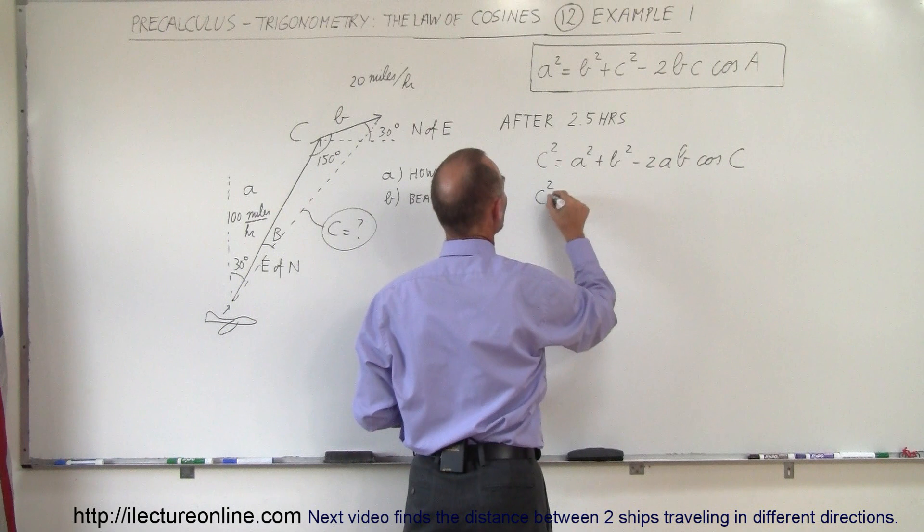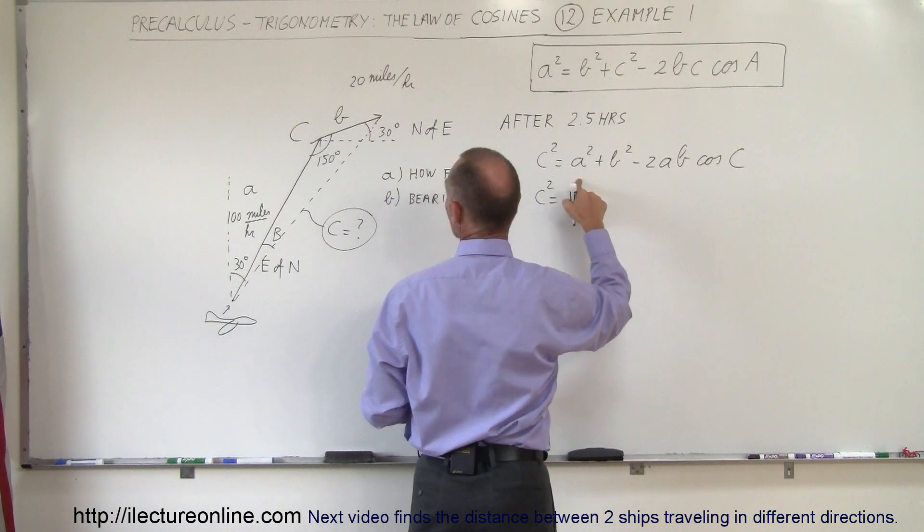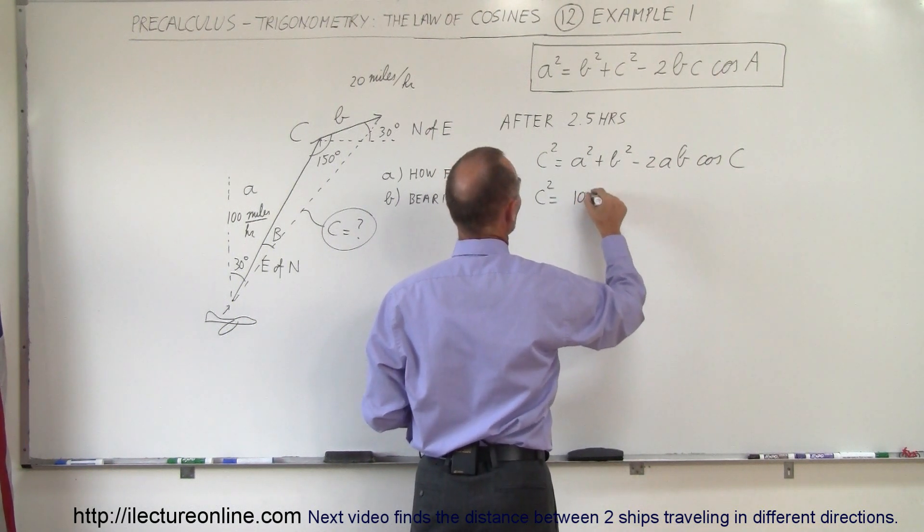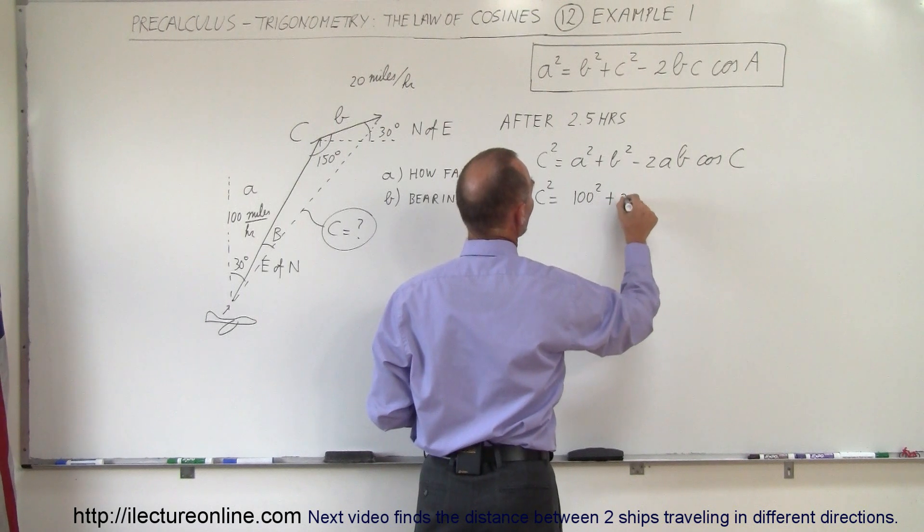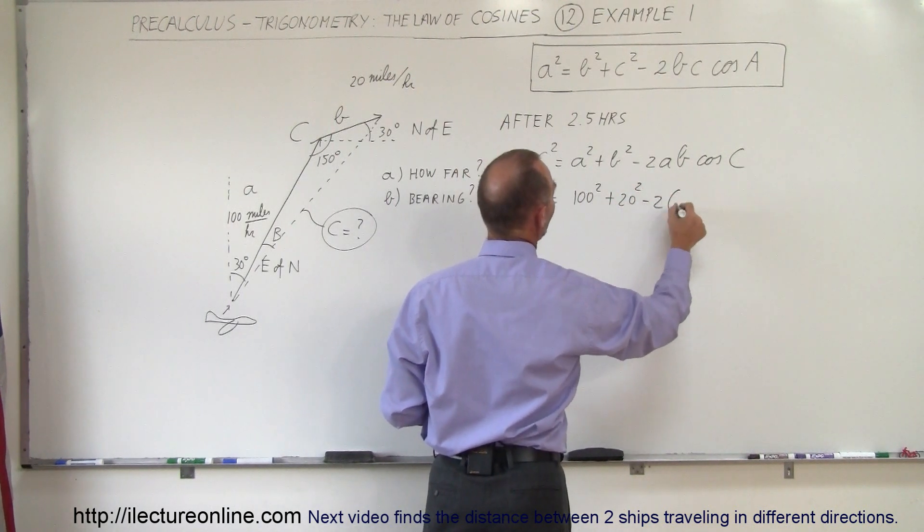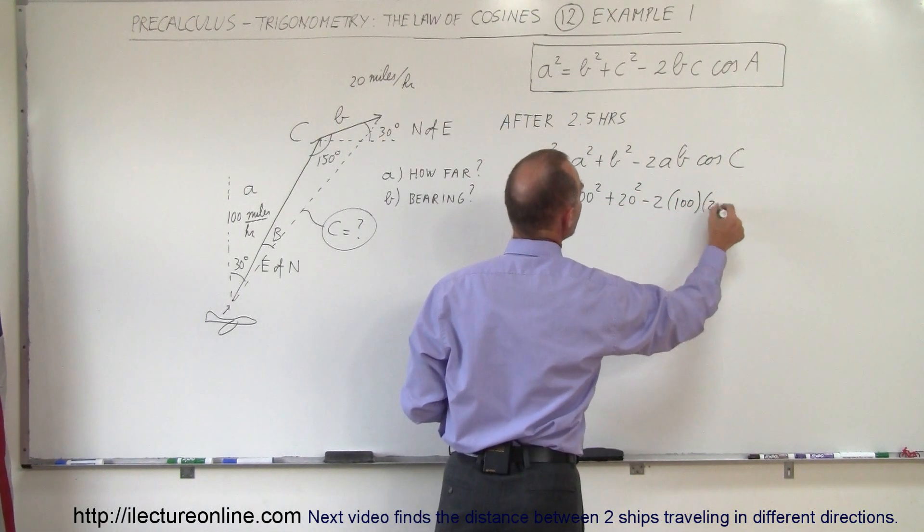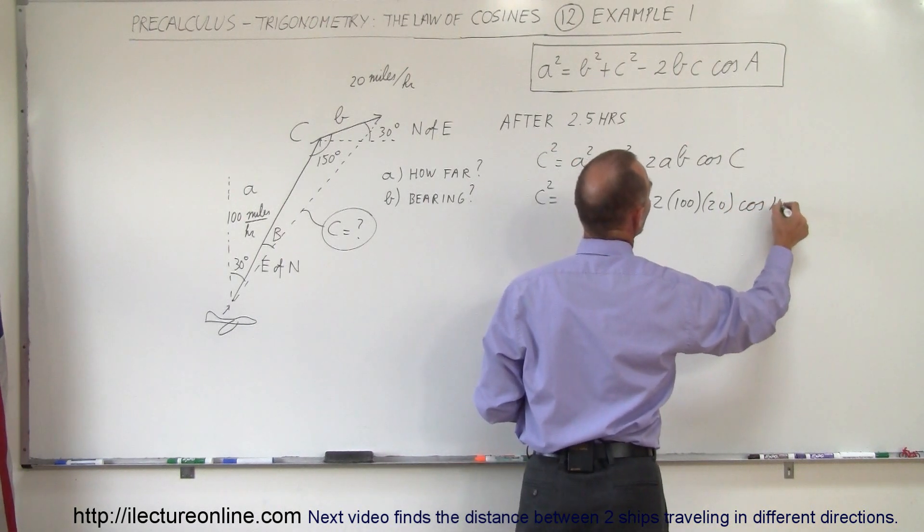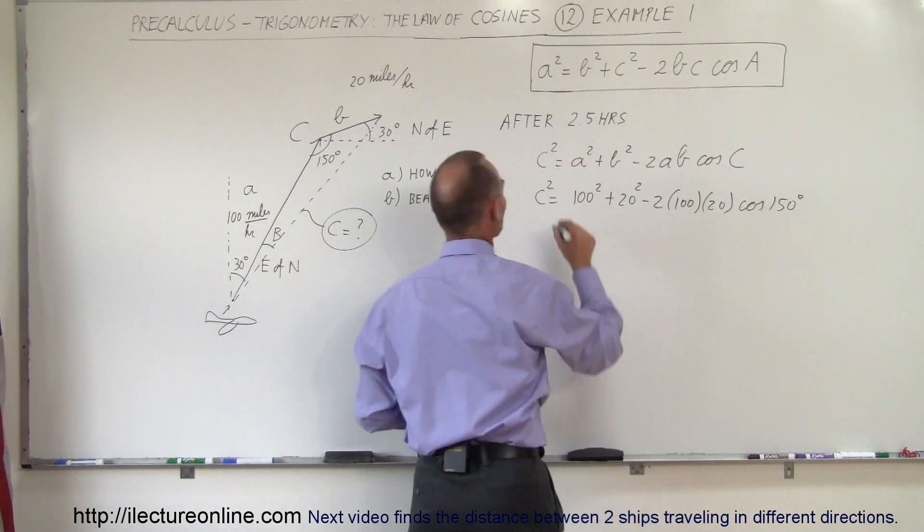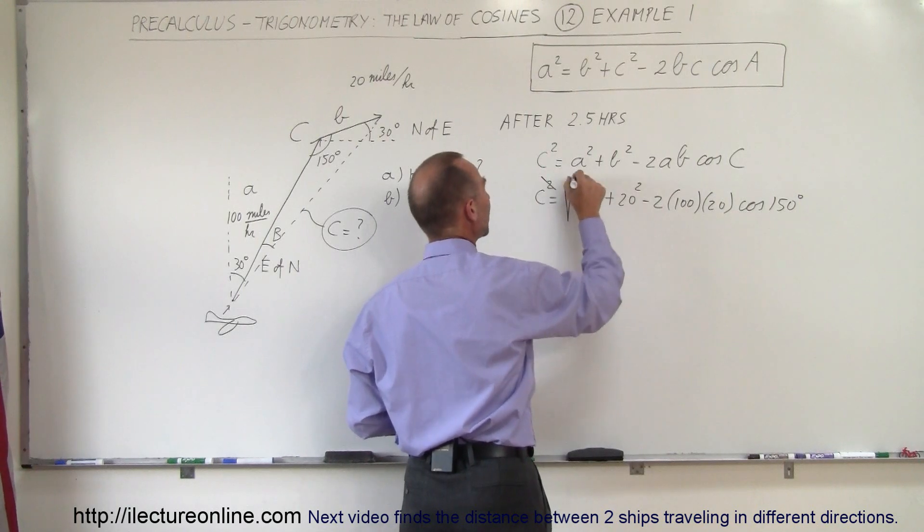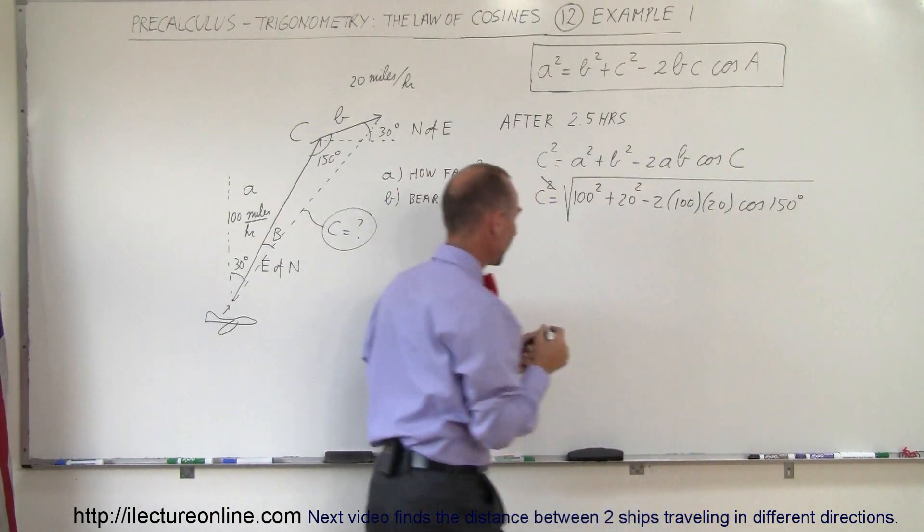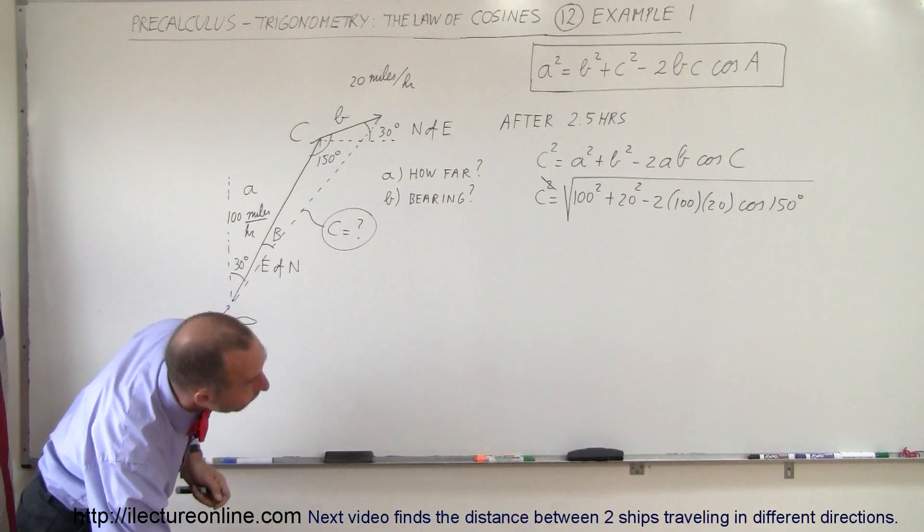So C squared is equal to A squared, that would be 100 squared, plus B squared, 20 squared, minus 2 times AB times the cosine of 150 degrees. And of course, if we want to take C by itself, we need to take the square root of all that. Alright, let's go ahead and do that.